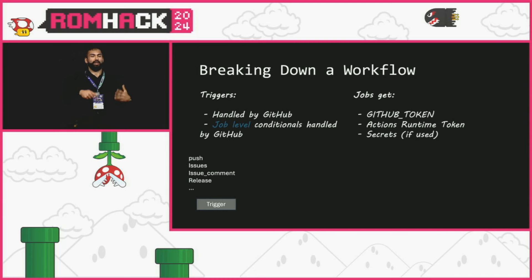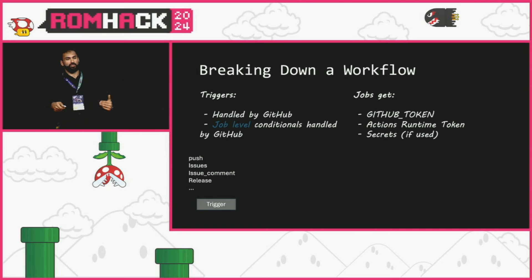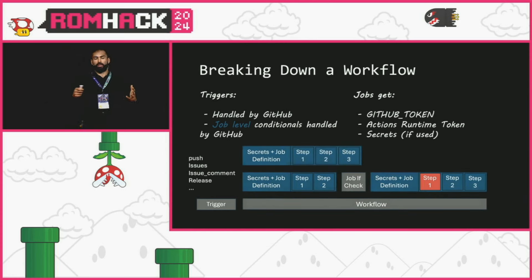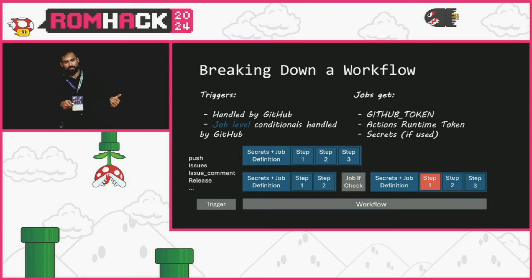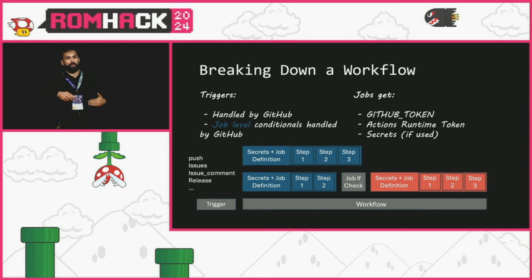A job is the lowest unit of computation when it comes to GitHub Actions security boundaries. When a job starts, it gets tokens for internal communication, and if secrets are configured, those secrets are sent to the runner — whether self-hosted or on GitHub's infrastructure. If someone is able to get code execution within a single step in a job, there are many ways to get secrets from the whole job. Compromising a single step effectively compromises the entire job.